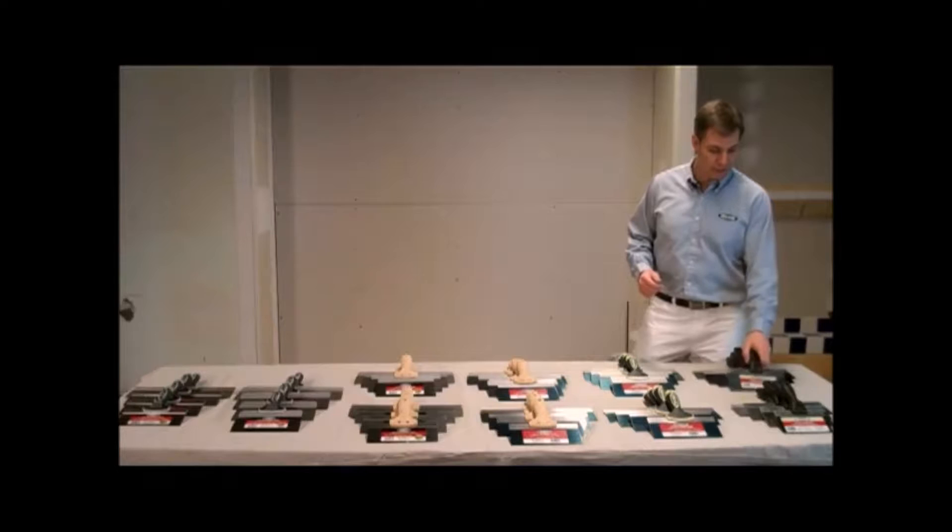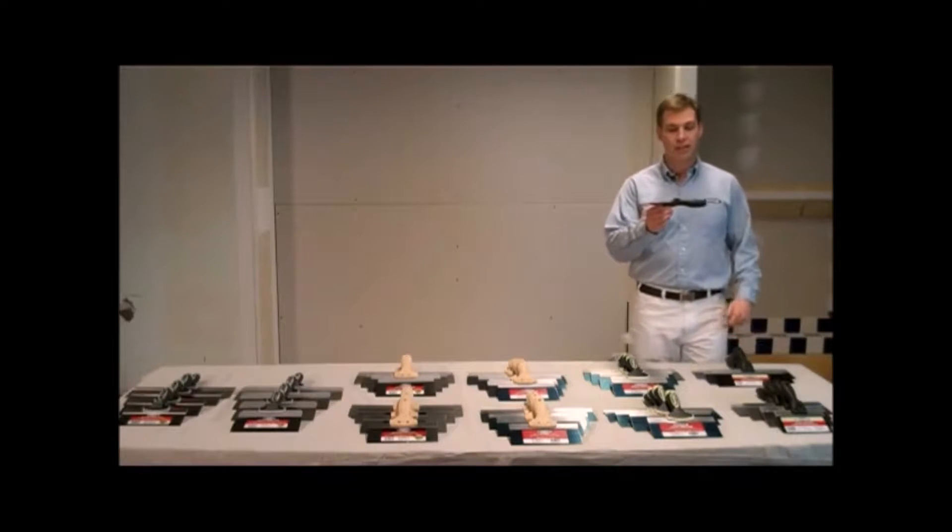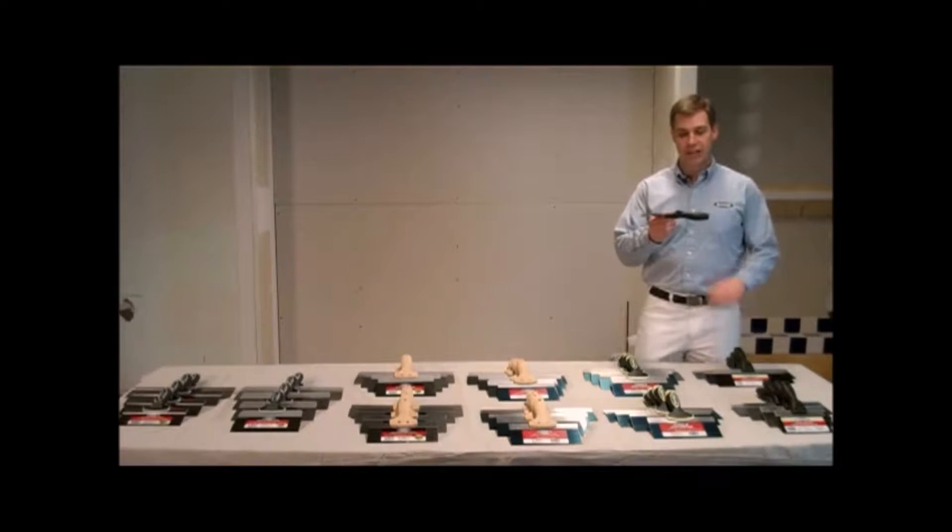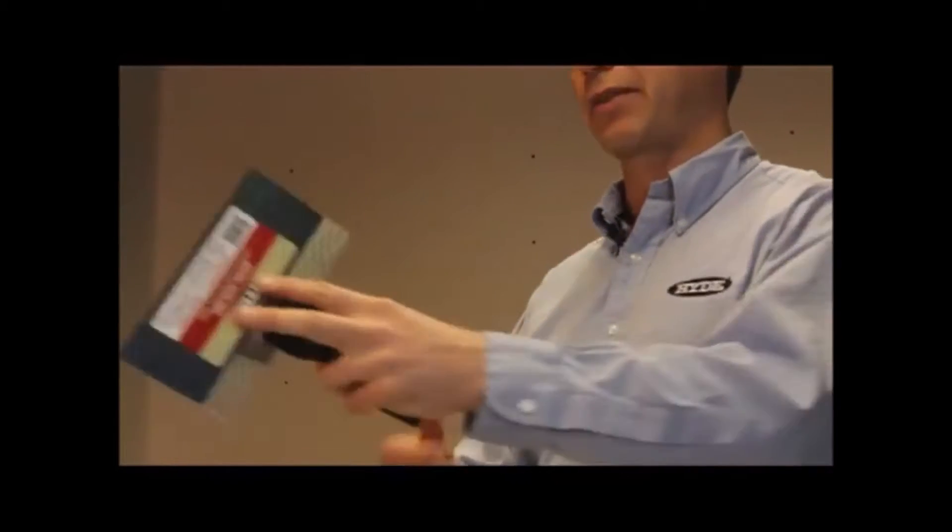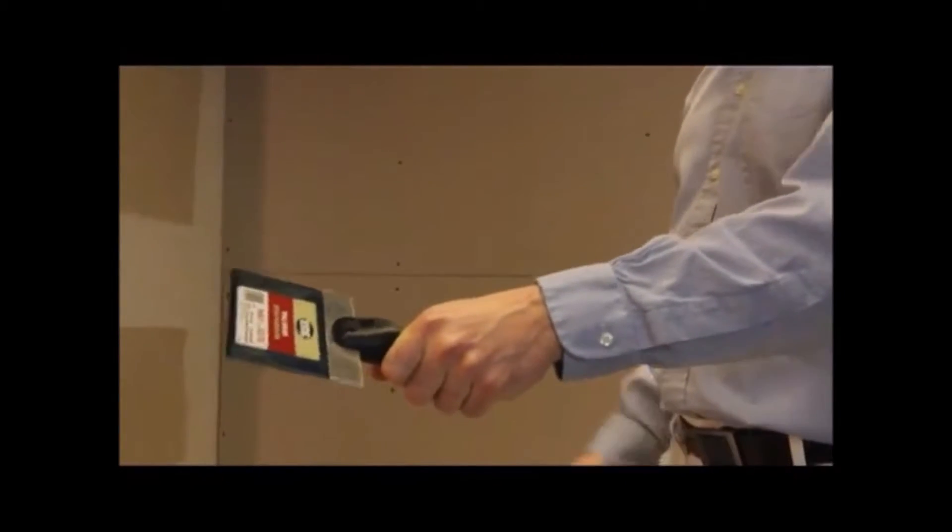First we're going to talk about our value series line. The biggest thing about this is that it actually has an offset handle. You've got a handle design that allows you to really utilize one side when you're putting mud onto a wall. And the way you would hold it obviously is like this, or when you're putting on your final coat like this.